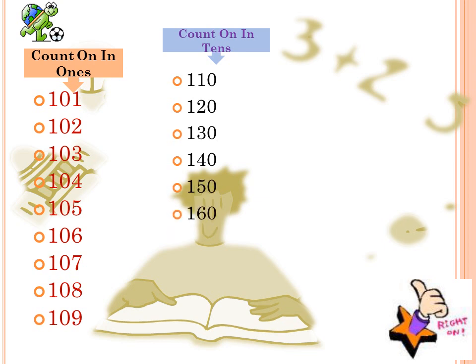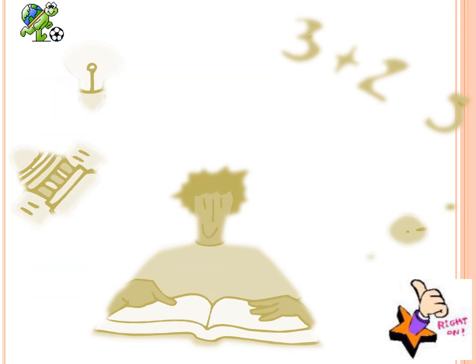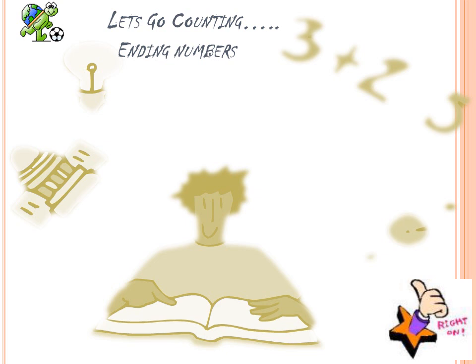Continuing in tens: 150, 160, 170, 180, 190, and of course 200. For us to be able to count and write 1 to 200 correctly, we need to master our ending numbers, so let's go counting.